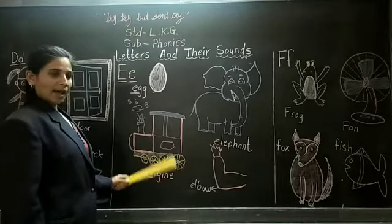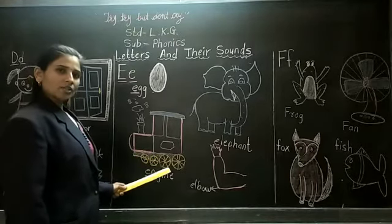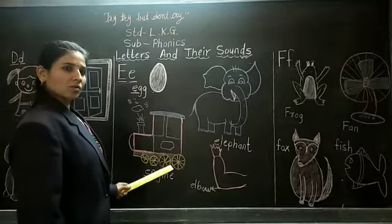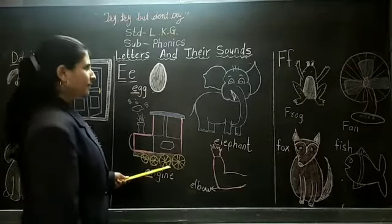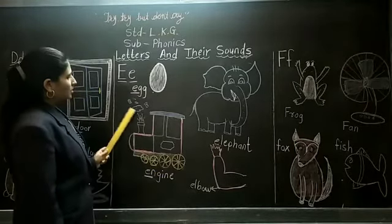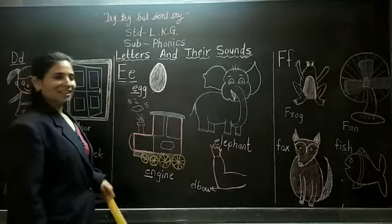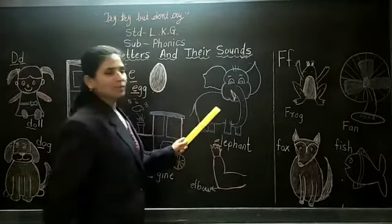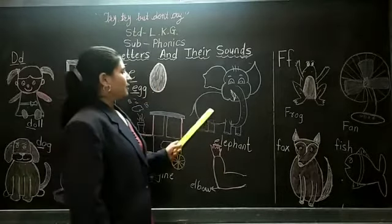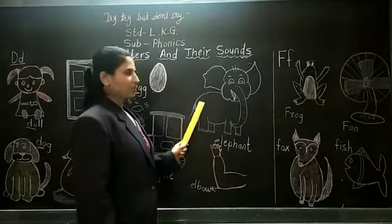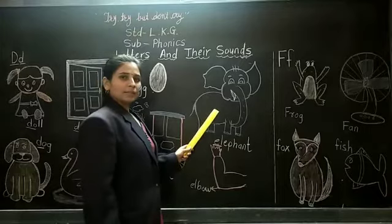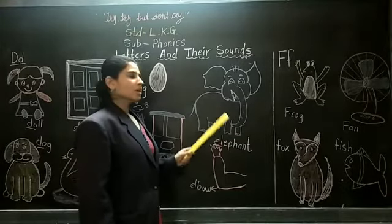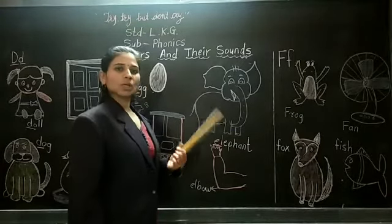And it makes noise, and train starts on track. And we use it for traveling. Next, eh, eh, elephant. See, this is the picture of elephant. Elephant is the biggest animal. And elephant is in forest. We saw elephant in circus.